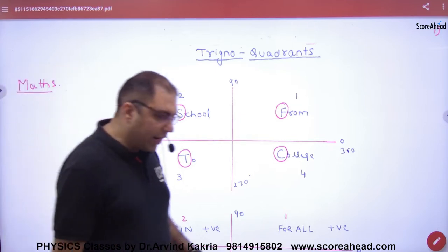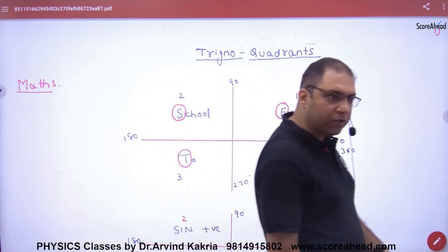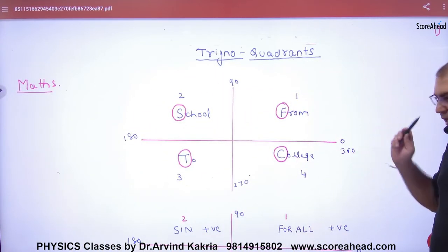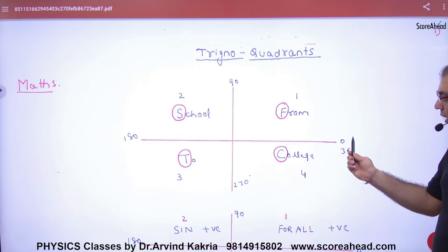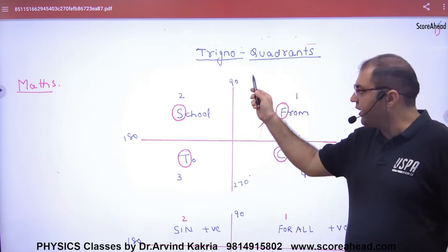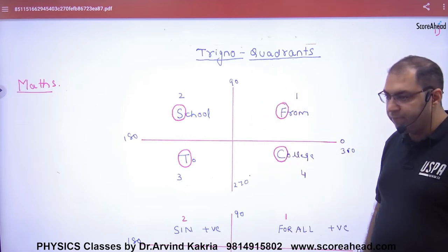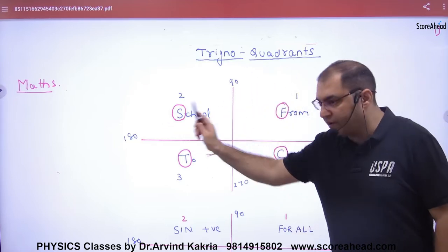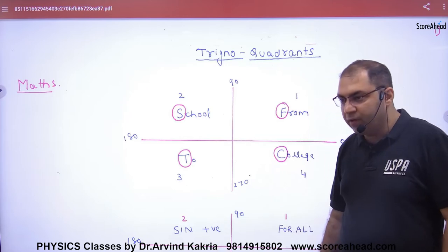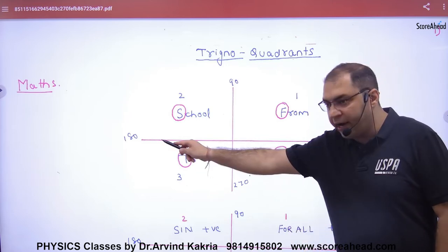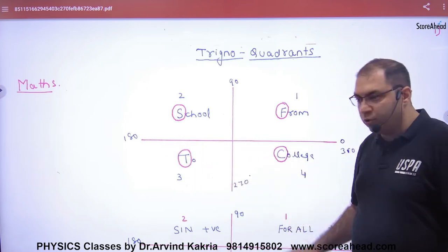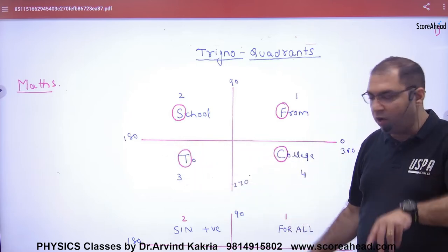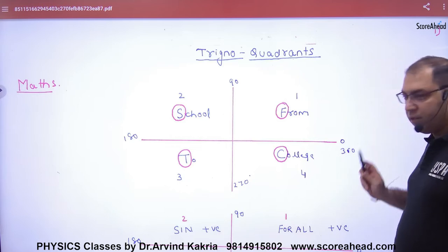We plot standard angles. We start with this line at 0 degrees. Going around, adding 90 gives us 90 degrees, then 180, then 270, and finally 360 degrees.